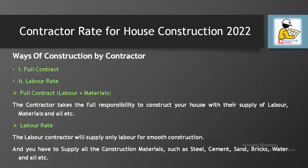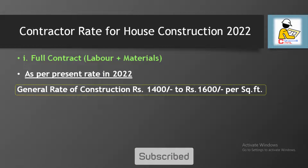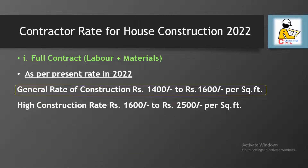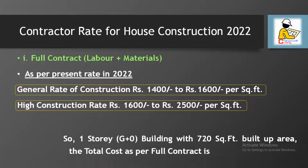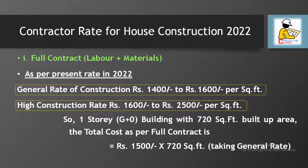Let's find out the construction rate under the full contract method. At present the general market rate is rupees 1,400 to rupees 1,600 per square feet, and for high-range construction it is rupees 1,600 to rupees 2,500 per square feet. Considering the general rate of rupees 1,500 per square feet, the total cost under full contract is rupees 1,500 multiplied by 720 square feet, which comes to rupees 10 lakh 80,000.